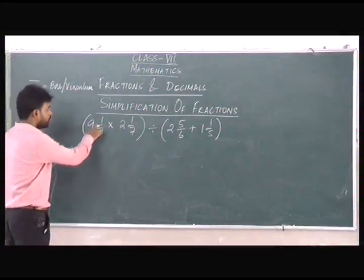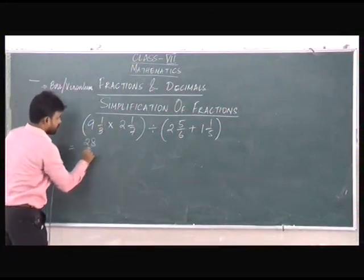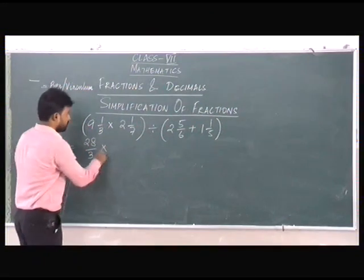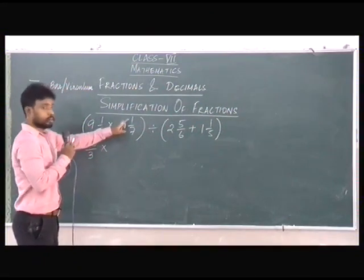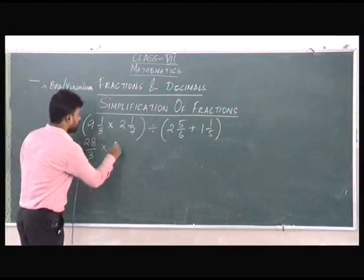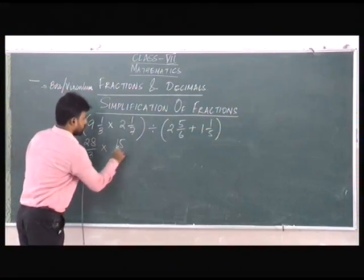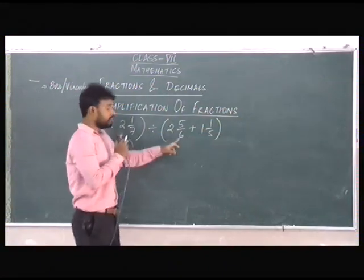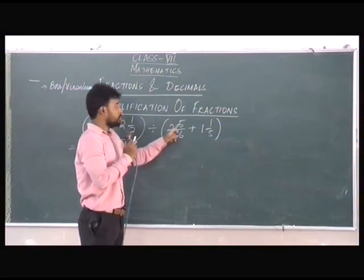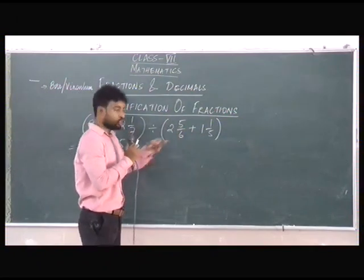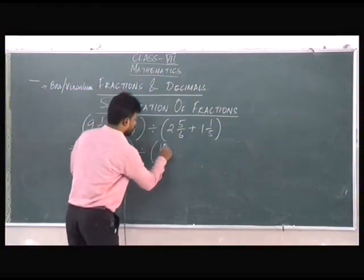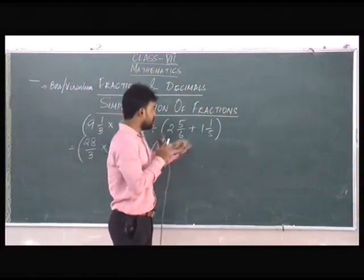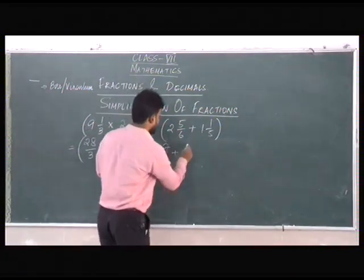9 times 3 is 27, plus 1, gives you 28 by 3. 7 times 2 is 14, plus 1, gives you 15 by 7. For 2 and 5 by 6: 6 times 2 is 12, plus 5, gives you 17 by 6. For 1 and 1 by 5: 5 times 1 is 5, plus 1, gives 6 by 5.